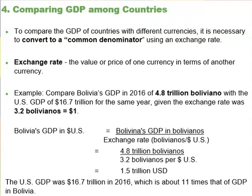A second issue is that countries have very different numbers of people. For instance, the United States has a much larger economy than Mexico or Canada, but it also has almost three times as many people as Mexico and nine times as many people as Canada. Thus, if we are trying to compare standards of living across countries, we need to divide GDP by population. To compare GDP of countries with different currencies, it is necessary to convert to a common denominator using an exchange rate, which is the value of one currency in terms of another.